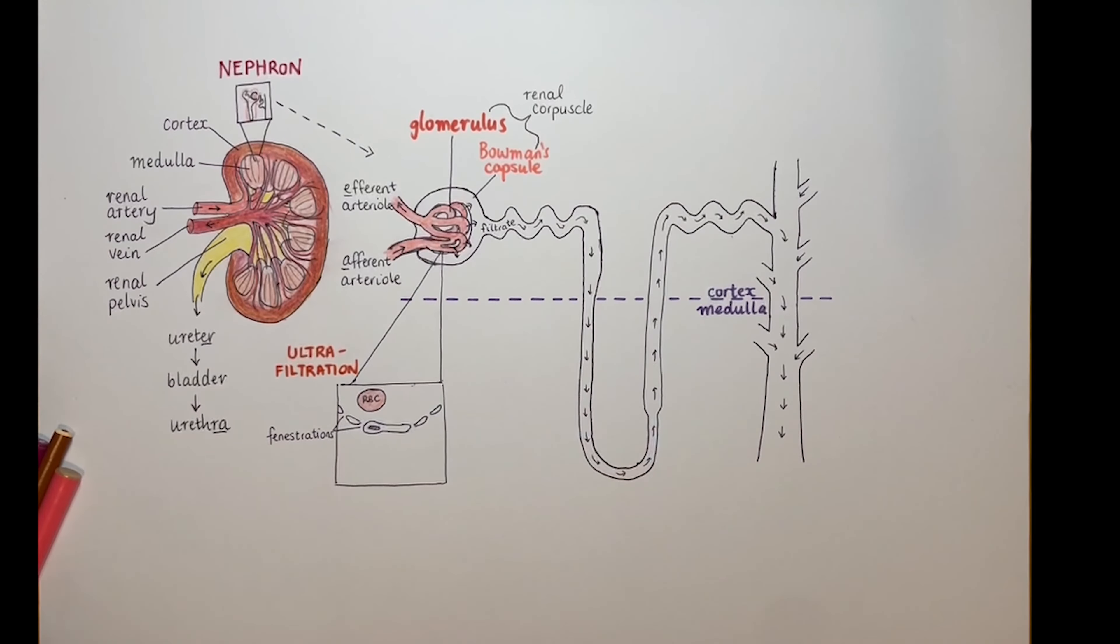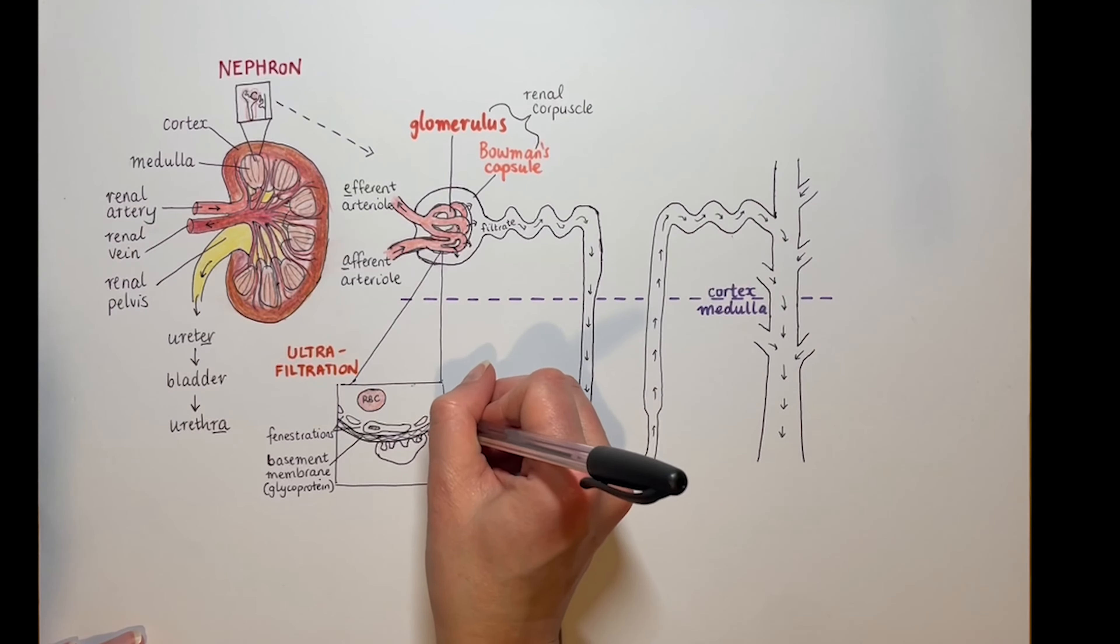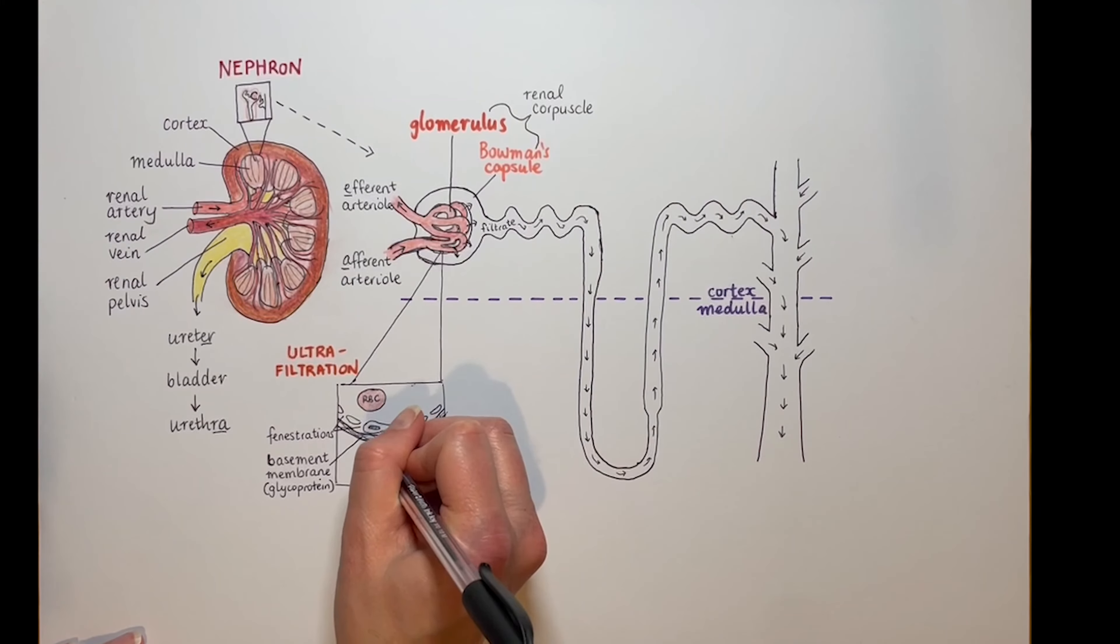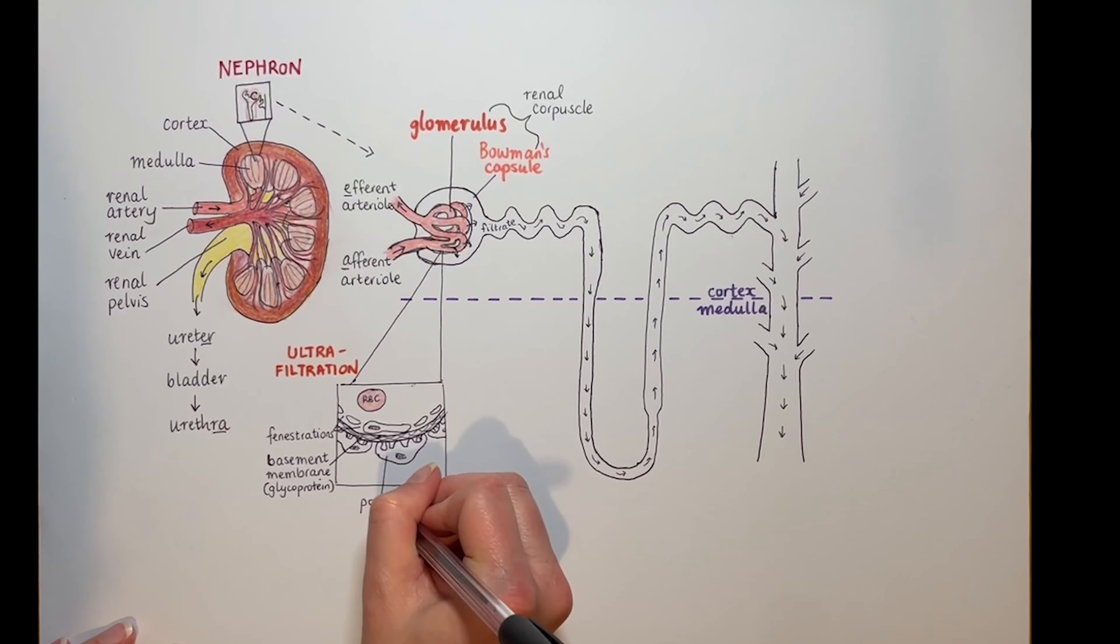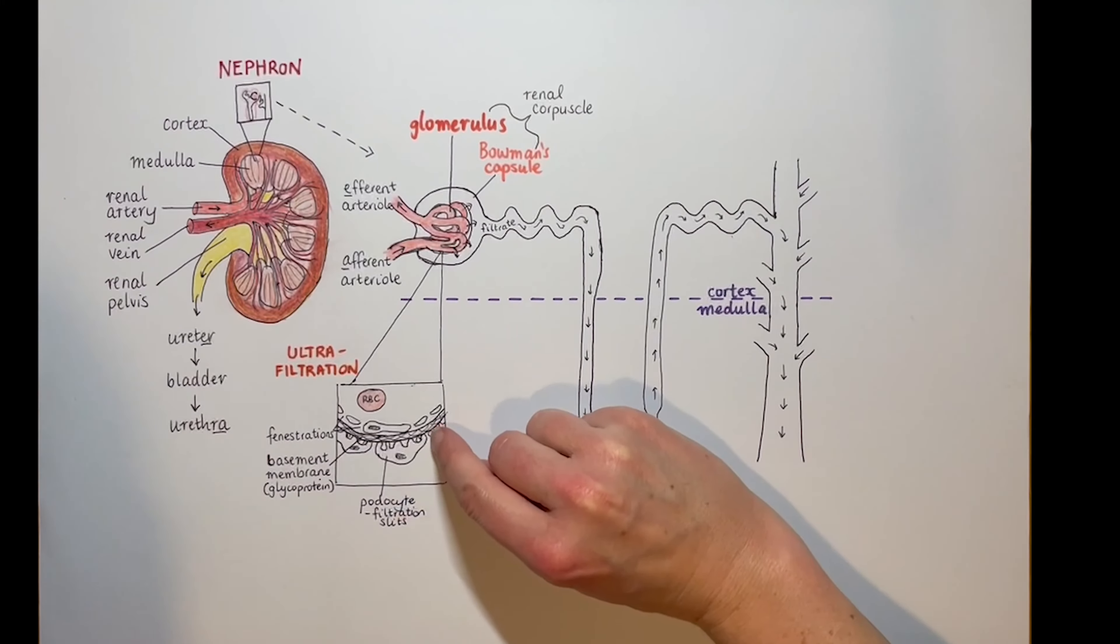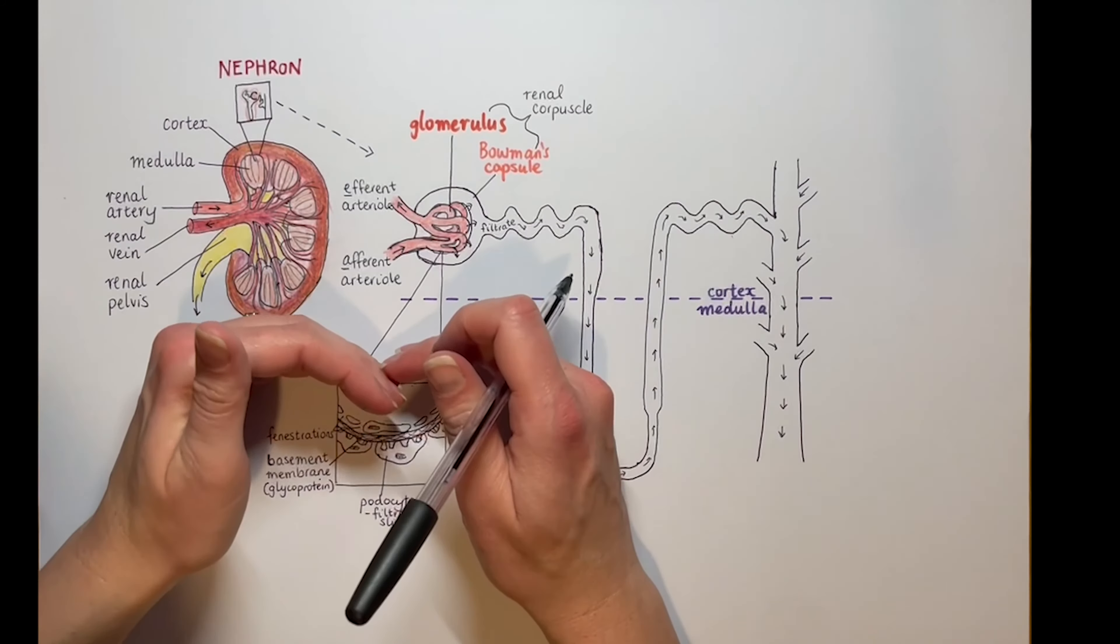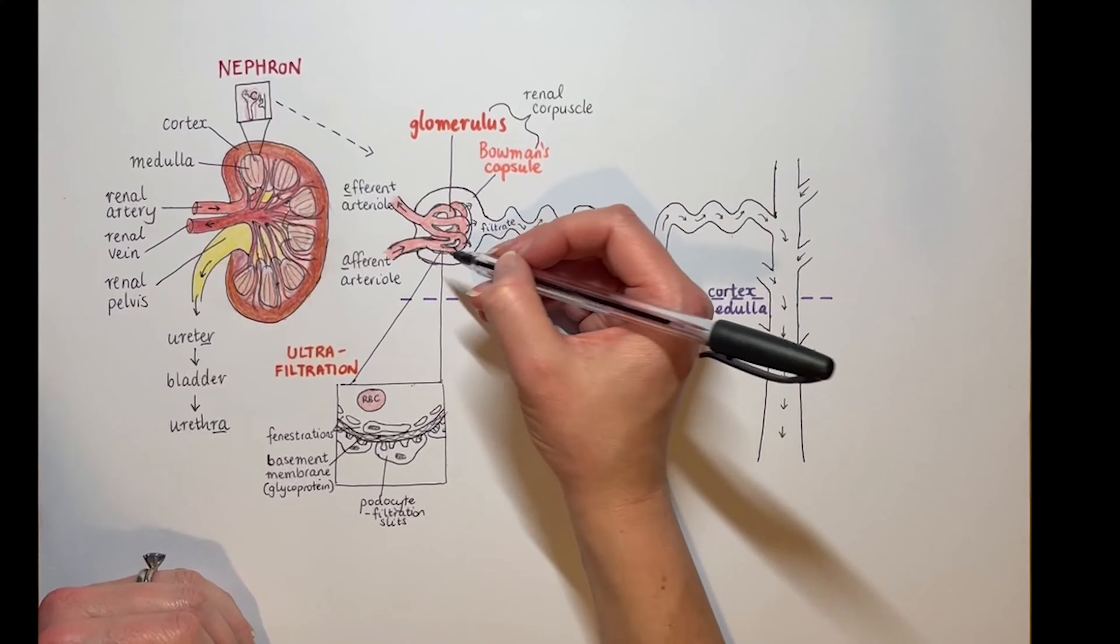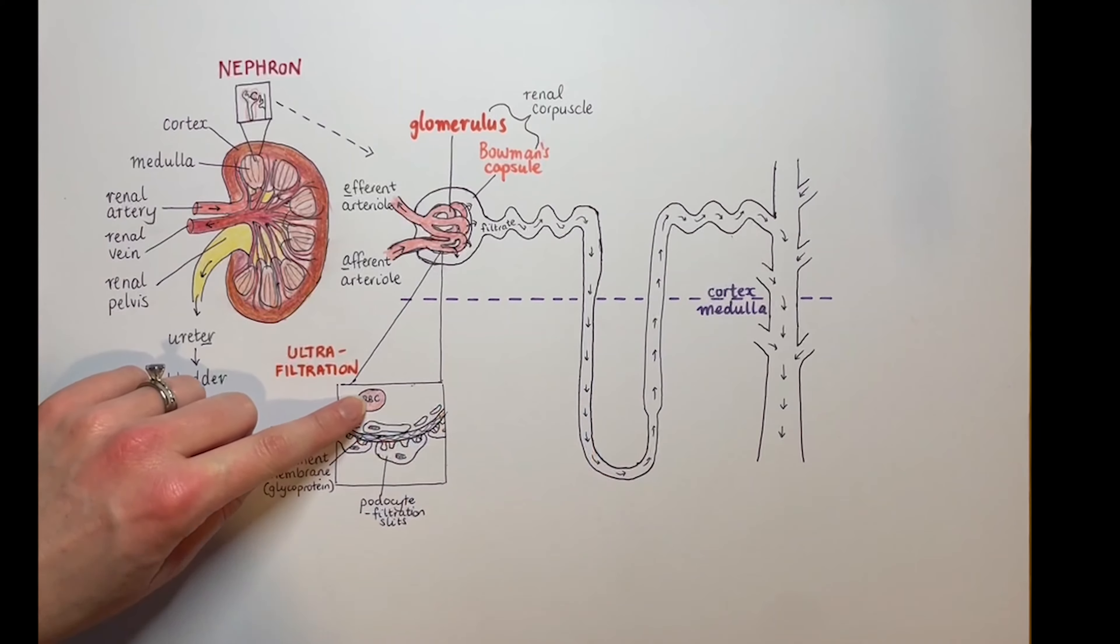They're supported by a mesh of glycoprotein called the basement membrane and cells from the epithelium of the inner wall of the Bowman's capsule called podocytes. They wrap around the glomerulus with foot-like projections, hence the pod part of their name, leaving filtration slits between them. Essentially we have three layers of sieves or mesh to get lots of the liquid bits and small dissolved things from your blood across quickly, but no big bits like cells or large proteins.